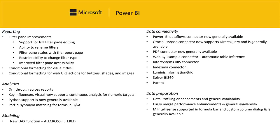The next feature under reporting is conditional formatting for visual titles. Since the initial release of Power BI, you've always been able to customize the text of your titles, but it's always had to be static text. Since Power BI reports are highly interactive, it makes sense that you may want your titles to be dynamic and reflect the current state of the report — based off of what users are clicking on, filter states, things like that. Now you can use the conditional formatting dialog to actually change the text of your report title based off of a DAX expression in your model.